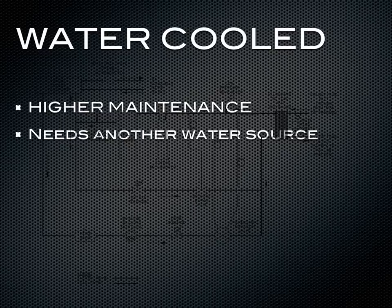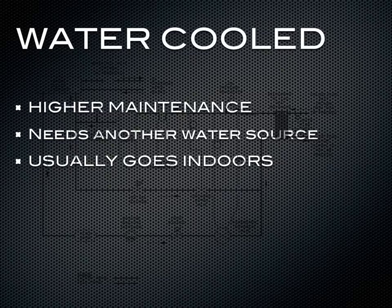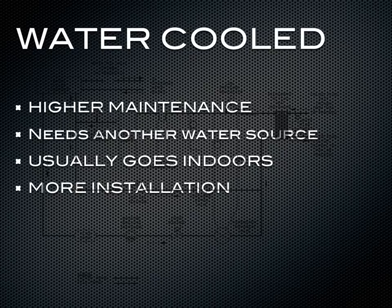Water-cooled chillers typically go indoors, because you don't have to worry about the heat being rejected through fans, so you can put these into more confined spaces like mechanical rooms. If you put it into a confined space, you want to make sure there's enough room around the chiller for maintenance — we recommend around 3 feet. There is more installation on a water-cooled chiller because there's the piping for the condenser side if you're piping it to the building water or a cooling tower. Water-cooled chillers are smaller in size compared to an air-cooled because you don't have the fans in the build.